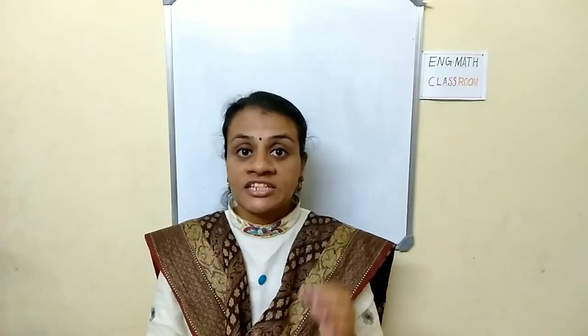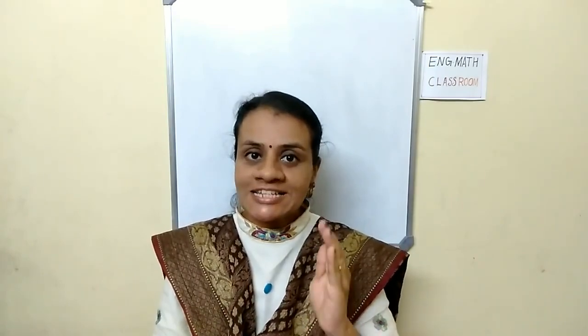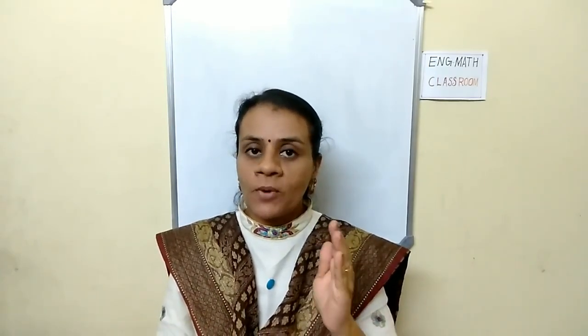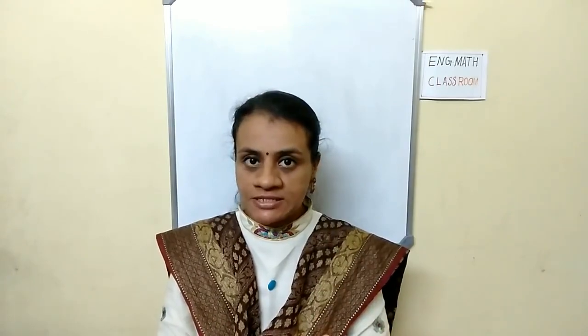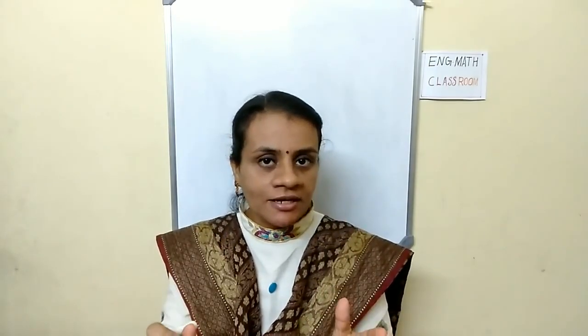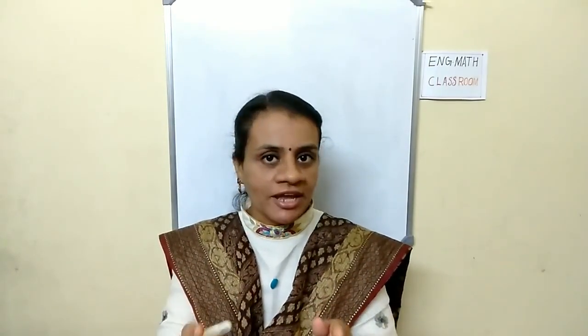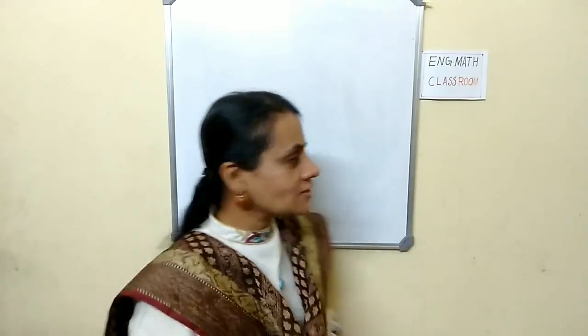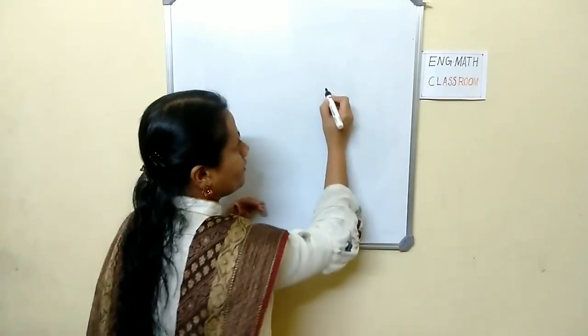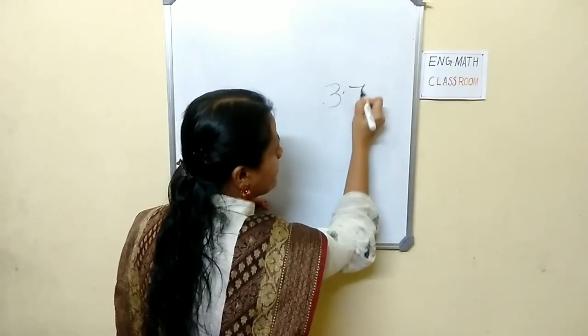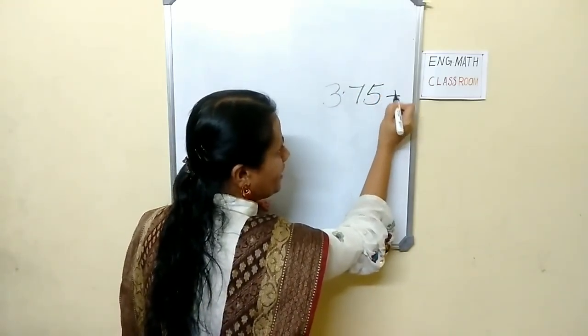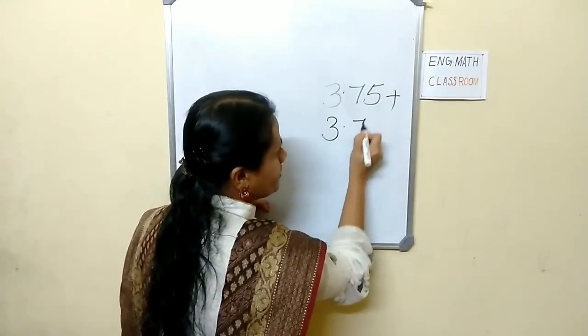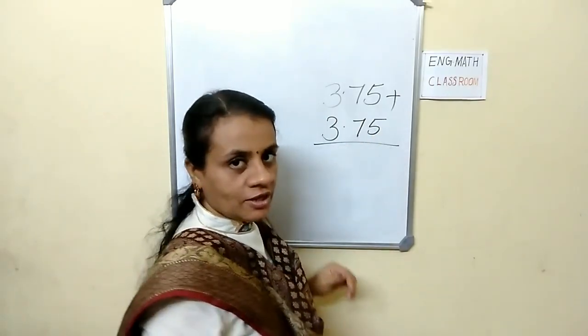Draw a circle of radius 3.75 cm. As I said earlier, it is not easy to take from our ruler, so we can add it. 3.75 plus 3.75.